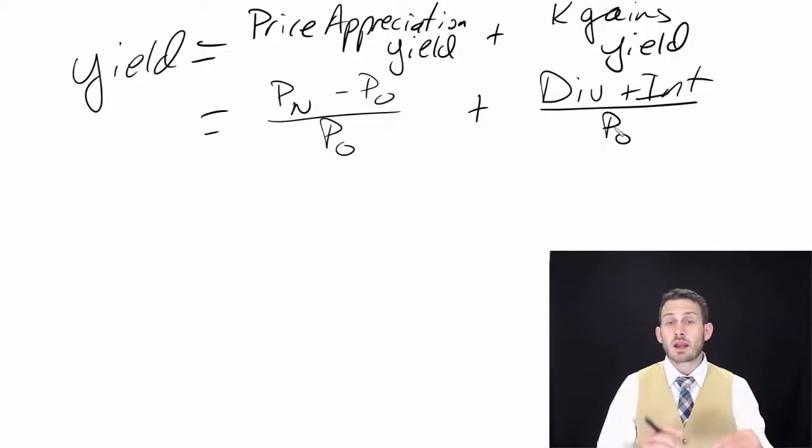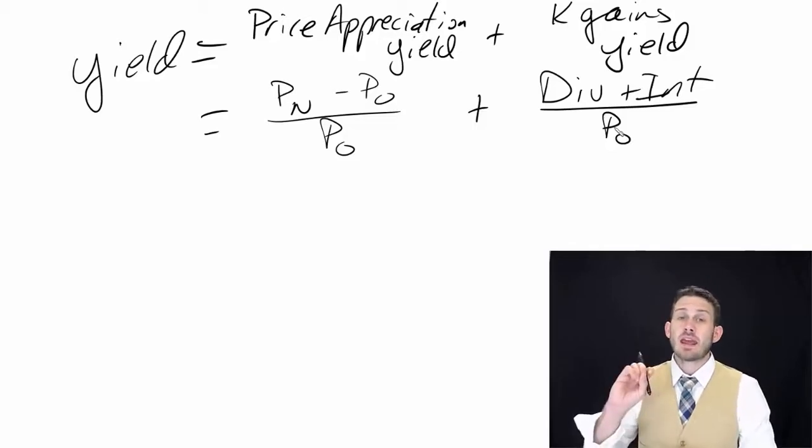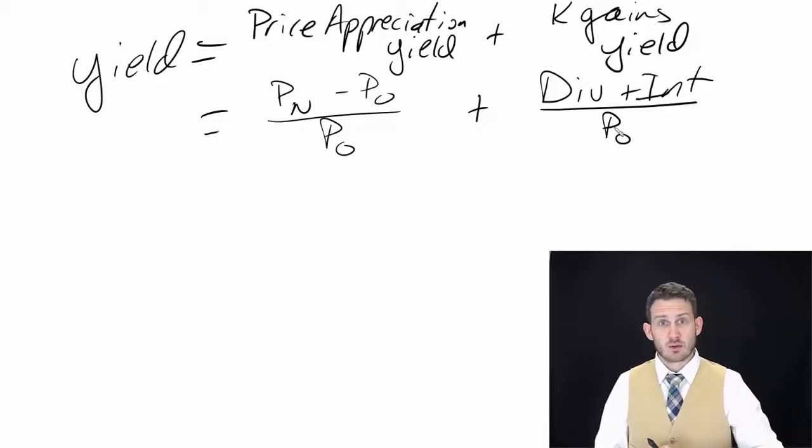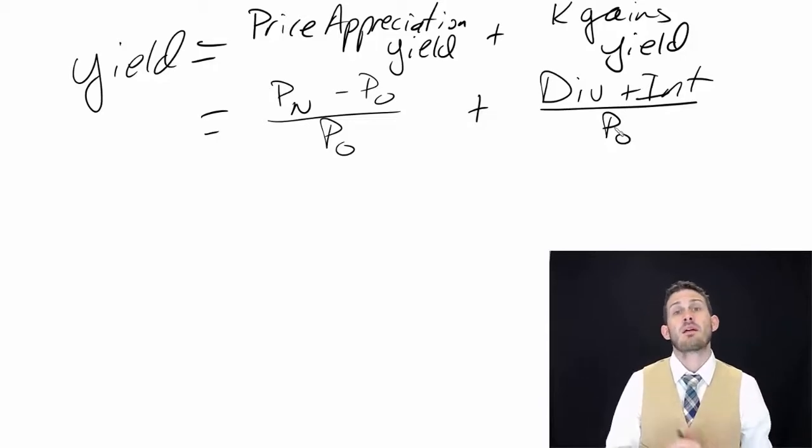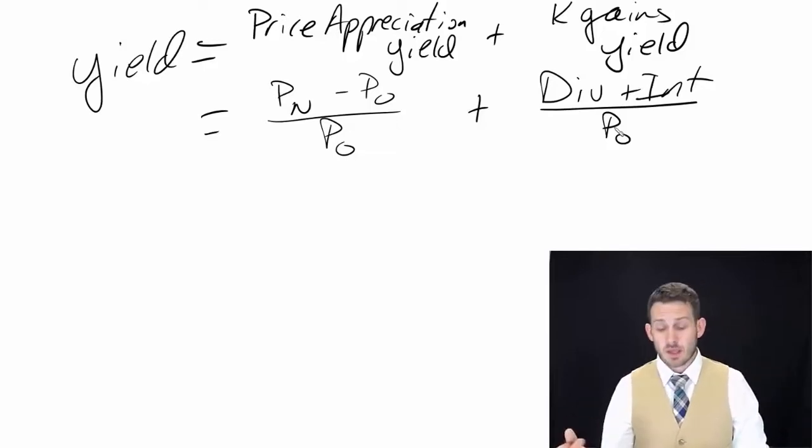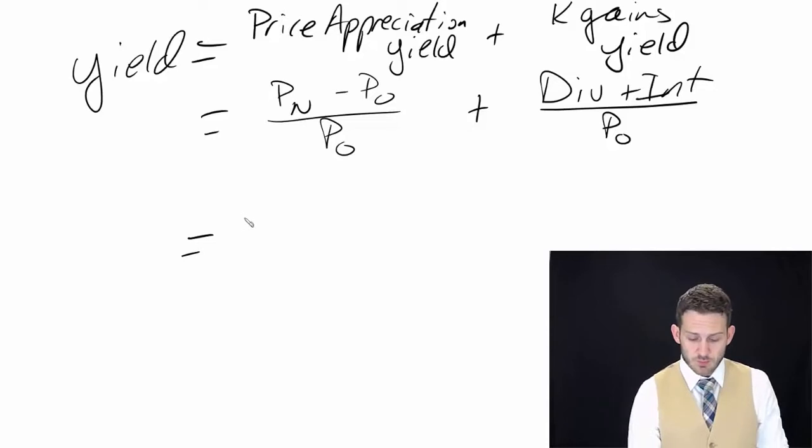If we own a bond or have money in a savings account paying interest, that's an interest component. If we own stock that pays a dividend - yearly, semi-annual, whatever - that tells us the dividend amount. These are two components, but we can set this all up into one: new price minus old price plus dividends plus interest, divided by the old price.